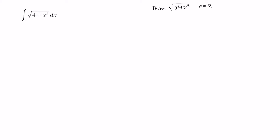We want to do a substitution of the form x equals a tangent of theta. So in our case, x equals 2 tangent of theta, making x squared equal to 4 tangent squared theta, and dx is equal to 2 secant squared theta d theta.